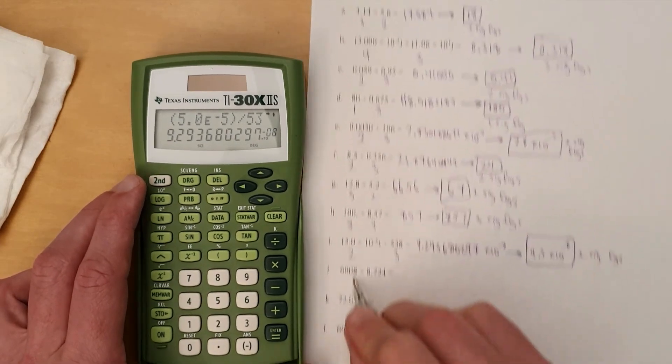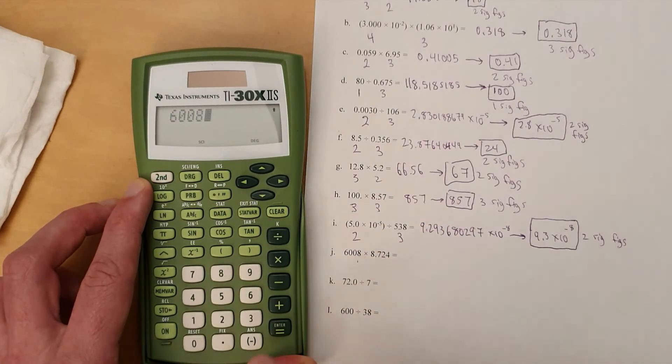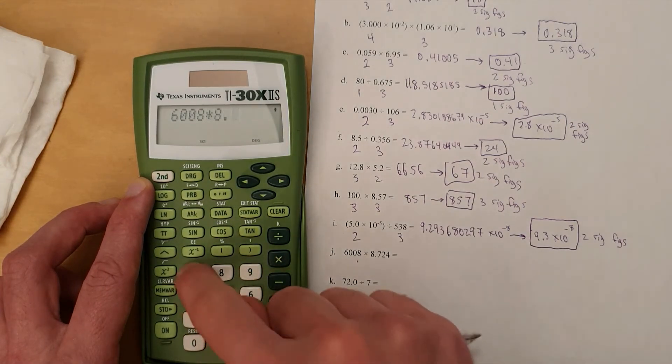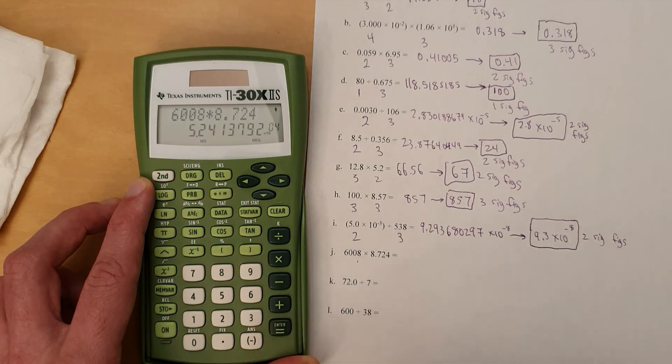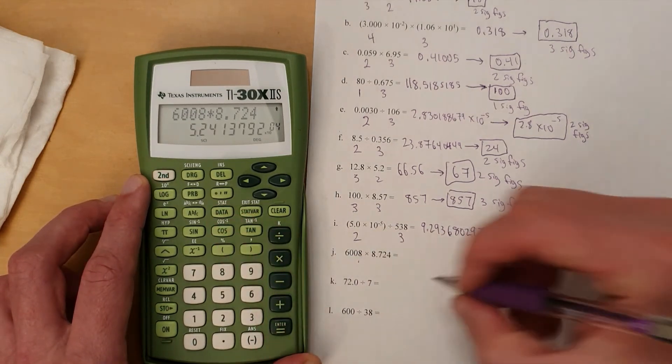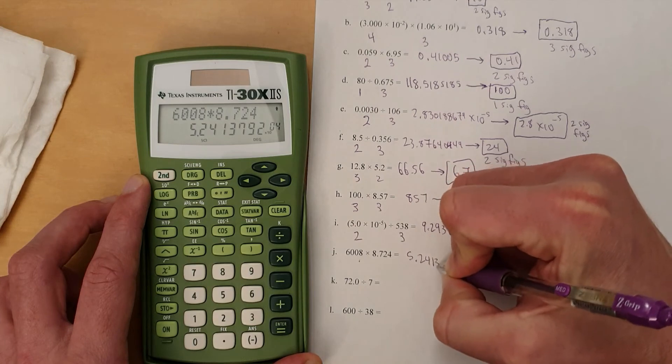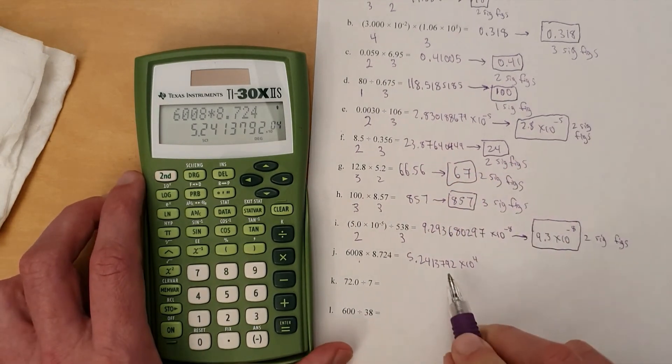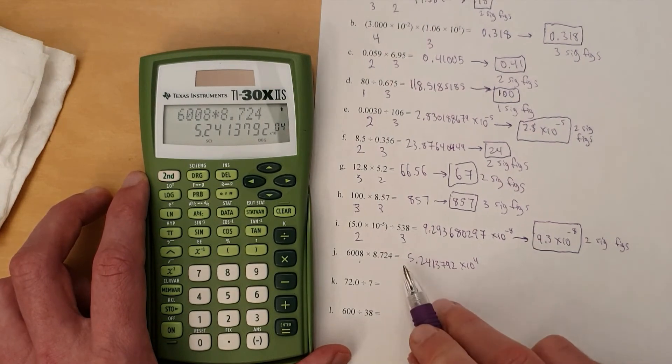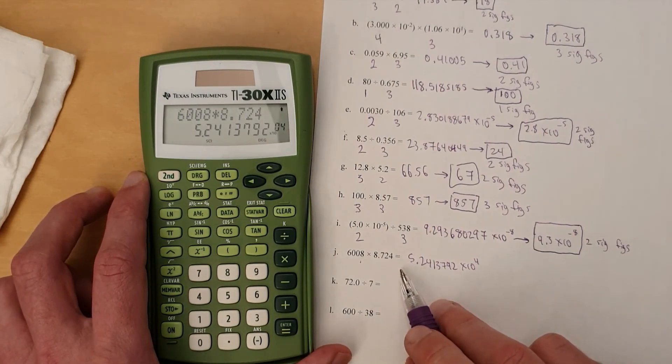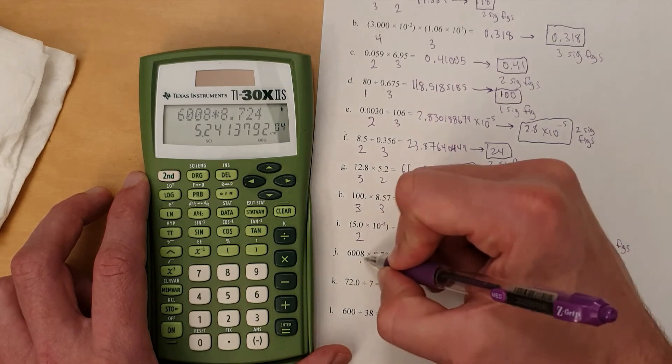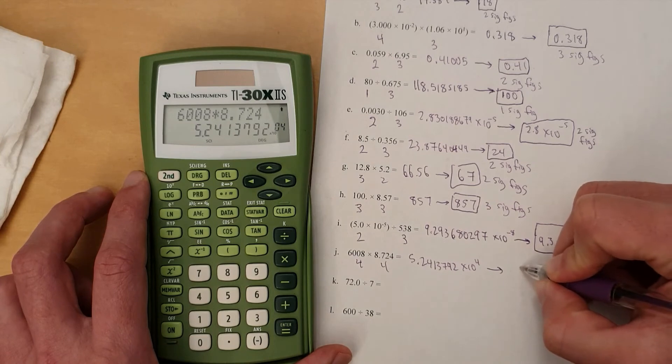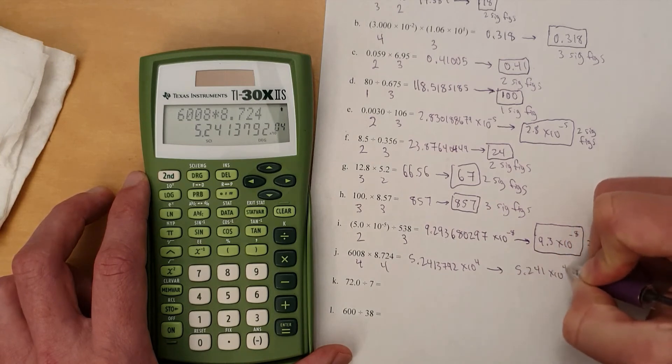This right here is the next one we're going to deal with, 6,008 times 8.724, 5.2413792 times 10 to the fourth. That's a big enough number. We definitely can't write that as just a regular number anyway. So we round that to four sig figs, four sig figs, four sig figs, 5.241 times 10 to the fourth.